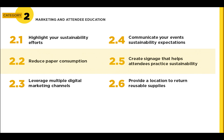Action items 2.4 and 2.5 are about helping to educate and inform your attendees. As part of your pre-event communications, share your sustainability goals and initiatives with those you are inviting, and then help them to participate in those sustainability goals and practices while providing education and signage at your event. And lastly, 2.6 is about providing a location at your event to return reusable supplies like name tags, pens, or other items.